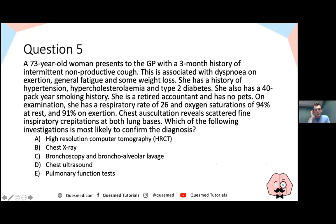Question five: A 73-year-old woman presents to the GP with a three-month history of intermittent non-productive cough associated with dyspnea on exertion, general fatigue, and some weight loss. She has hypertension, hypercholesterolaemia, and type 2 diabetes, and a 40 pack-year smoking history. She's a retired accountant with no pets. On examination, respiratory rate 26, oxygen saturations 94% at rest and 91% on exertion, with scattered fine end-inspiratory crepitations at both lung bases. Which investigation is most likely to confirm the diagnosis?